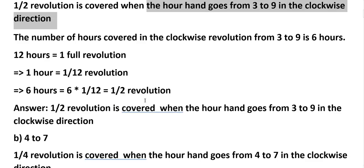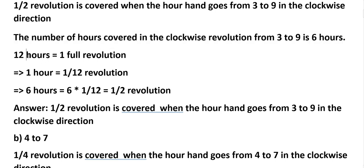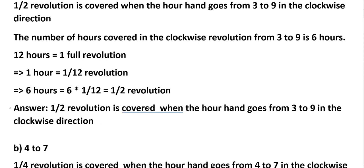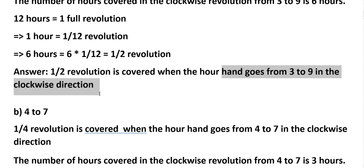The number of hours covered by the clockwise revolution from 3 to 9 is 6 hours. 12 hours means 1 full revolution, so 1 hour means 1/12 revolution. 6 hours means 6 × 1/12, that is half revolution. Answer: half revolution is covered when the hour hand goes from 3 to 9 in the clockwise direction.